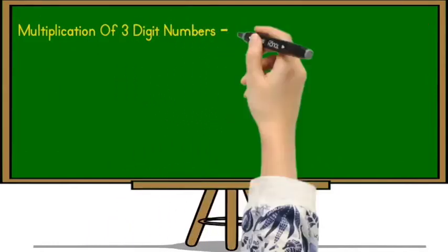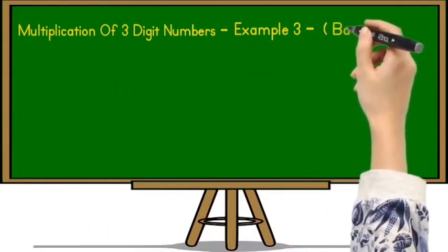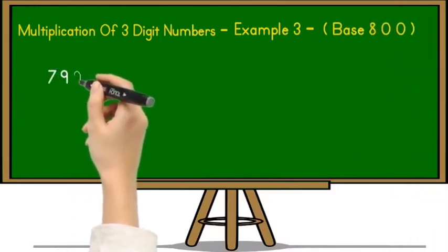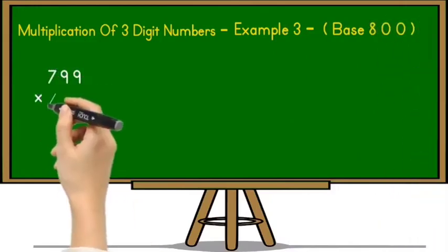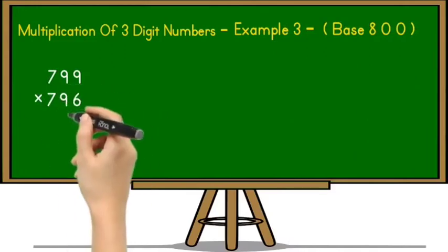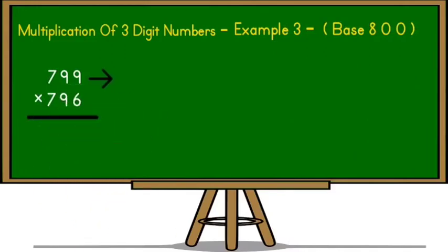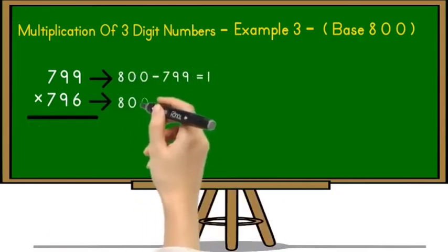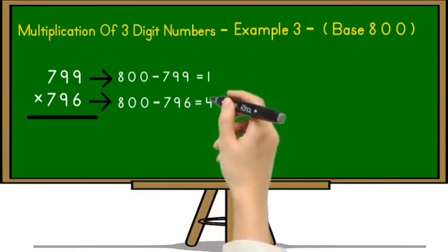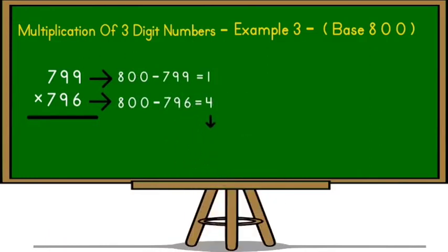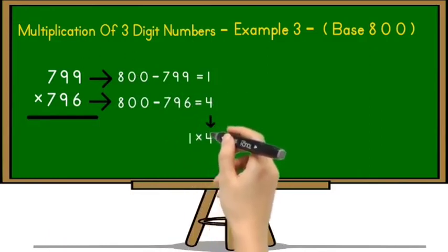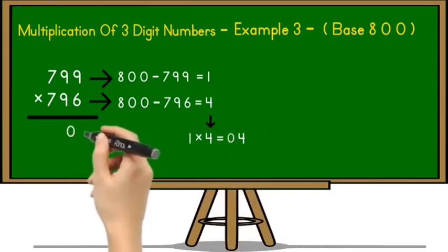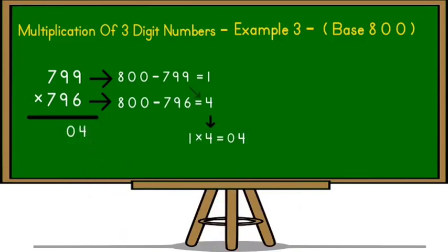Let's take third example for multiplication of three digit number whose base is 800. So example is here 799 multiplied by 796. So for both this number base is 800. So let us find out complement. 800 minus 799 is equal to 1 and 800 minus 796 is equal to 4. Now multiply this complement together. So 1 multiplied by 4 is equal to 4 which is a single digit number. To make it 2 digit number we have to add 0 before 4. Now write down this 04 in a product.